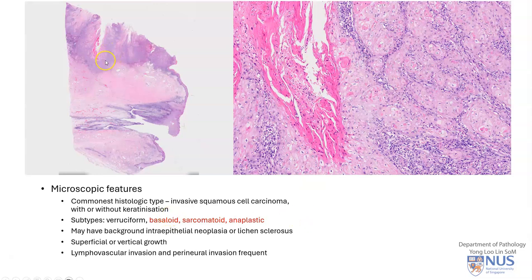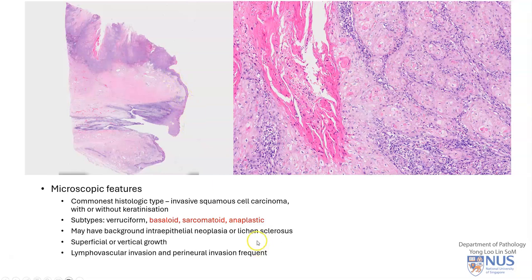Microscopically, we can see invasive squamous cell carcinoma with islands and sheets of malignant squamous cells, sometimes with keratinization. There are some subtypes, and in particular the basaloid, sarcomatoid, and anaplastic subtypes have a worse prognosis. There may also be a background of intraepithelial neoplasia or dysplasia, or a condition known as lichen sclerosis, where there is marked sclerosis of the lamina propria.